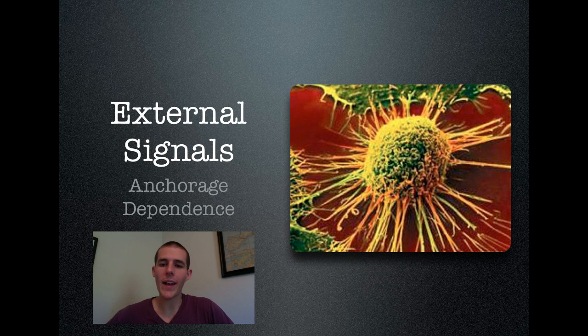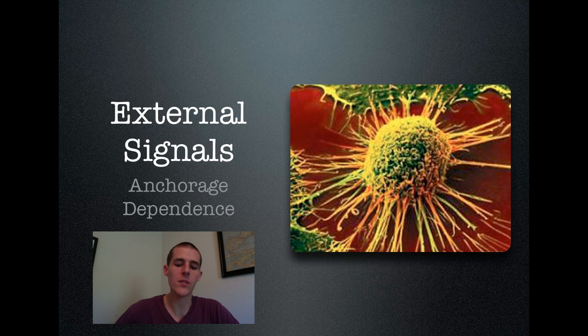There is also anchorage dependence, where normal, healthy cells can only divide if they are connected to something. They can't just be floating around out in the bloodstream, dividing all willy-nilly. So, if they're not connected to anything, normal cells will not divide. Those would be two external signals to know: density-dependence and anchorage-dependence.